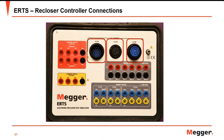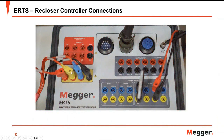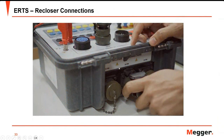Let's check how to connect the Megger relay test system, the SMRT. Here you can see we connected the current for testing the overcurrent functions, and we have connected the binary output of the SMRT going to the 32-pin of the ERTS. The next connection is the recloser connection, which is connected to the recloser unit.